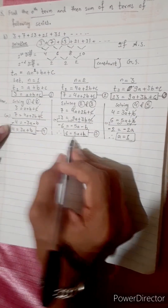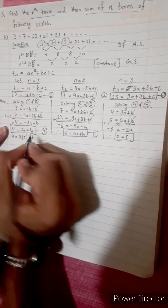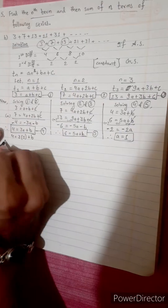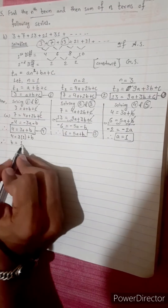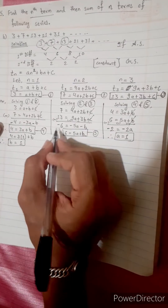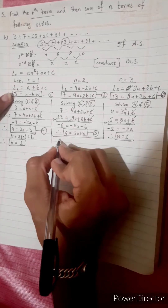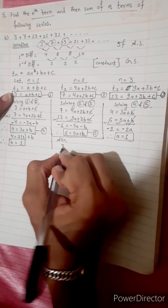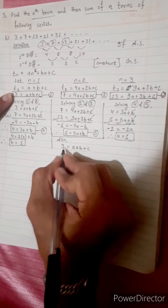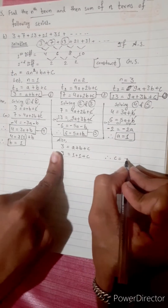Substituting a equals 1 into equation 4: 4 equals 3 times 1 plus b, so b equals 4 minus 3, therefore b equals 1. Now substituting a equals 1 and b equals 1 into equation 1: 3 equals 1 plus 1 plus c, therefore c equals 1. So a equals 1, b equals 1, c equals 1.